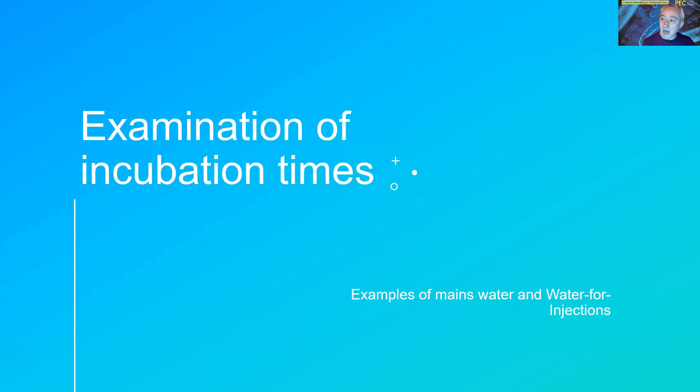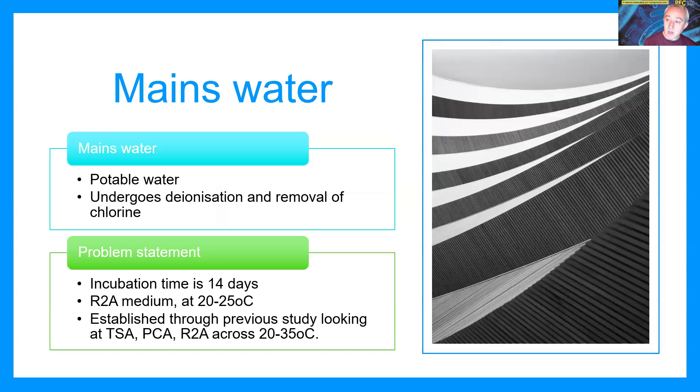We're going to have a look at the incubation times and we're going to look at two types of water: mains water and water for injections. With mains water, this is the supply of drinking water, which we want to soften, subject to electrodeionization and reverse osmosis to produce our final purified water.